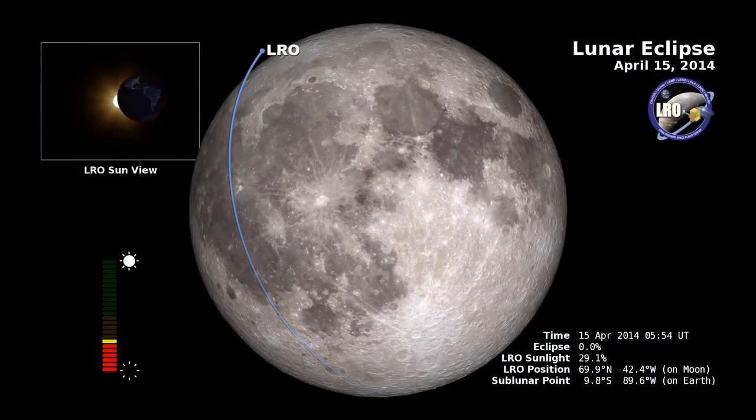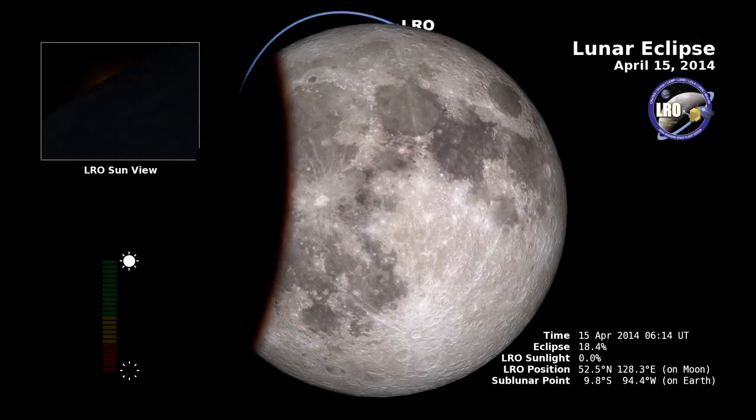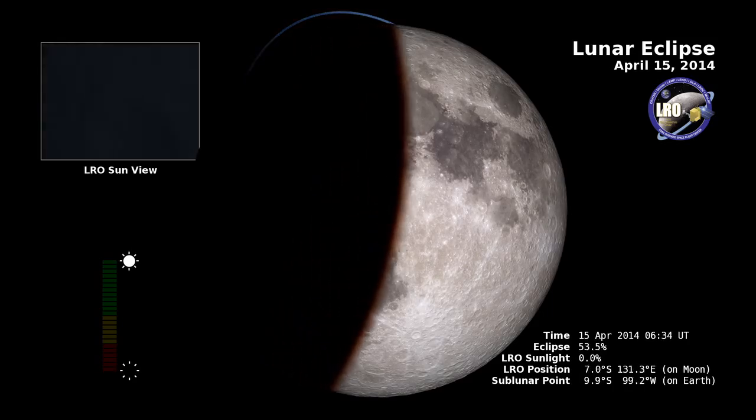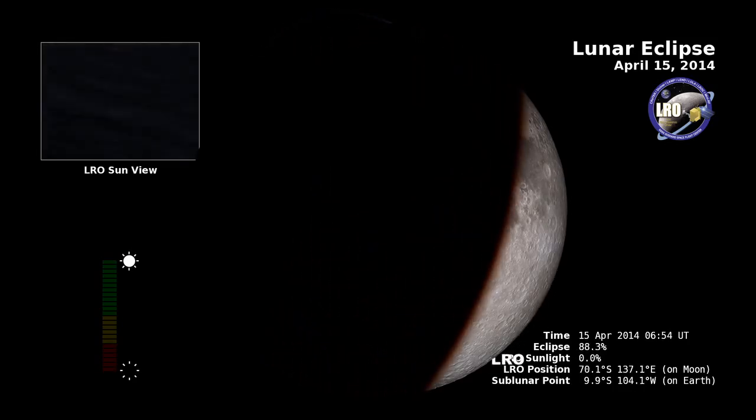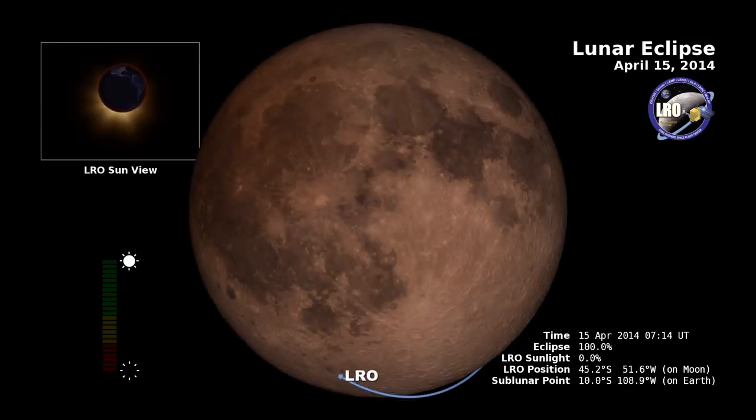So the eclipse is going to affect LRO in one very important way. LRO's batteries are charged by solar energy, and so during an eclipse, the moon and the LRO spacecraft are going to be in darkness for a very long period of time, so the battery won't get to be charged. So we're going to be turning off all of the instruments in LRO so we don't drain the battery.